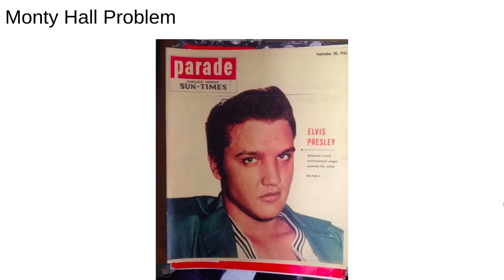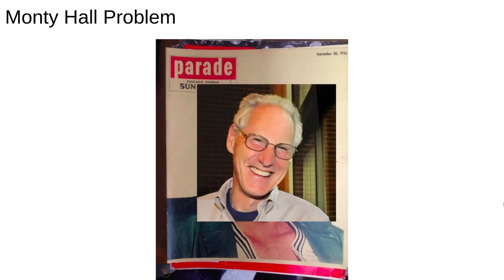This problem became famous when it appeared in Parade magazine in 1990, when a columnist called Marilyn Vos Savant gave the correct answer and the magazine was deluged by people — many of them with PhDs — who wrote in to tell her that she was wrong. The problem was actually first posed in 1975 by a man called Steve Slevin. The point of this little paradox is that probability is not intuitive — we have to carefully and rigorously formulate it so we don't end up confusing ourselves and picking a goat.